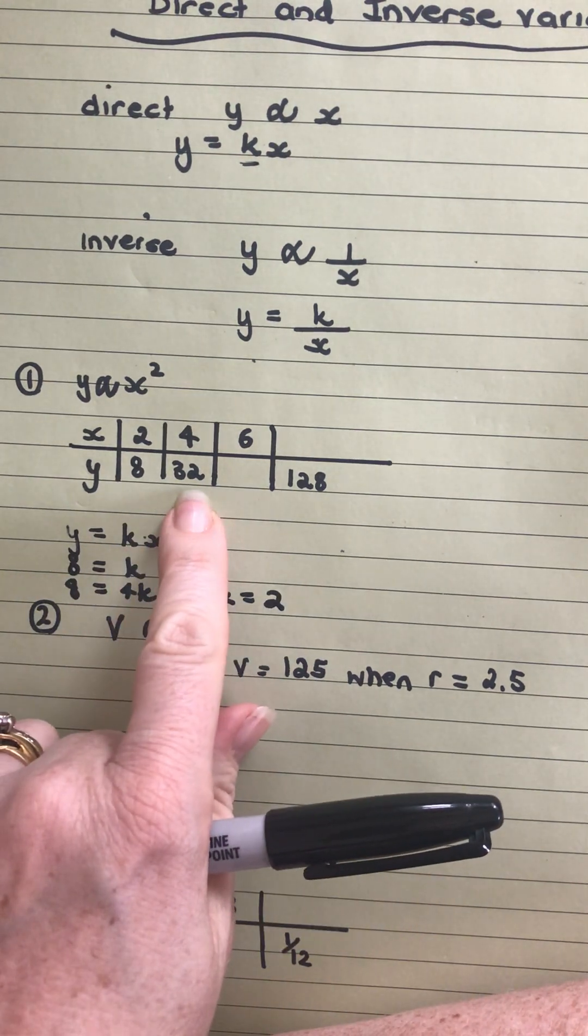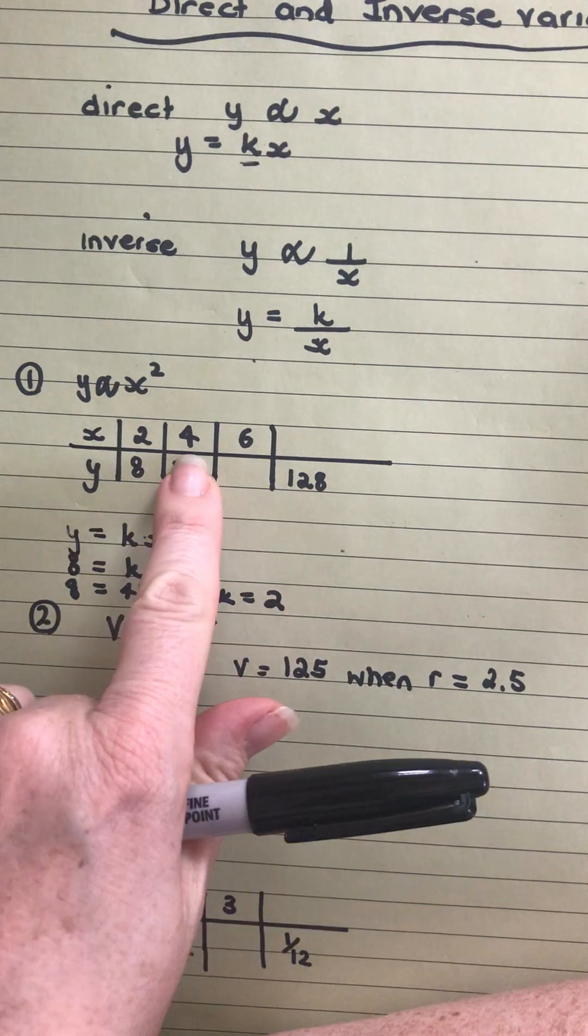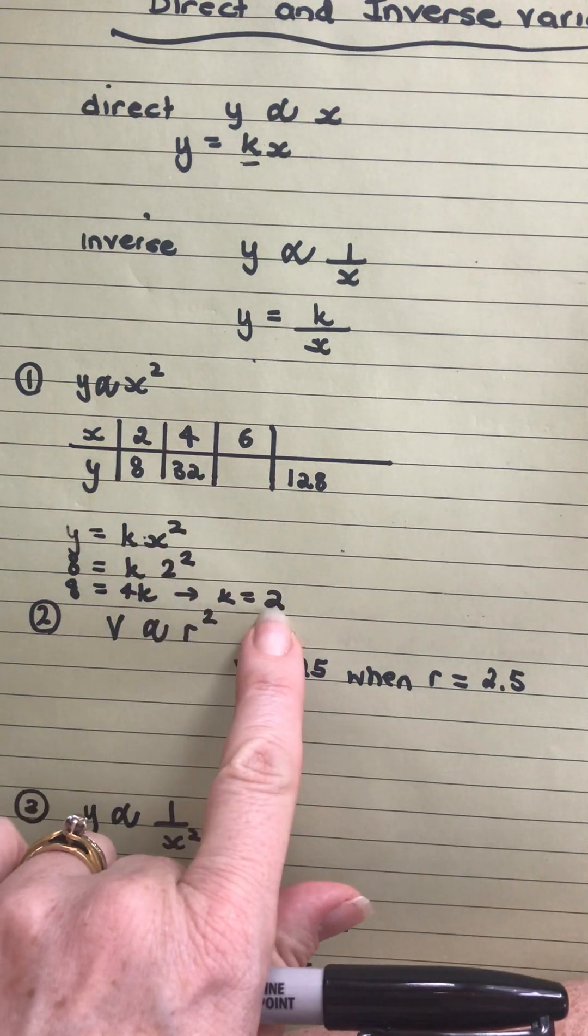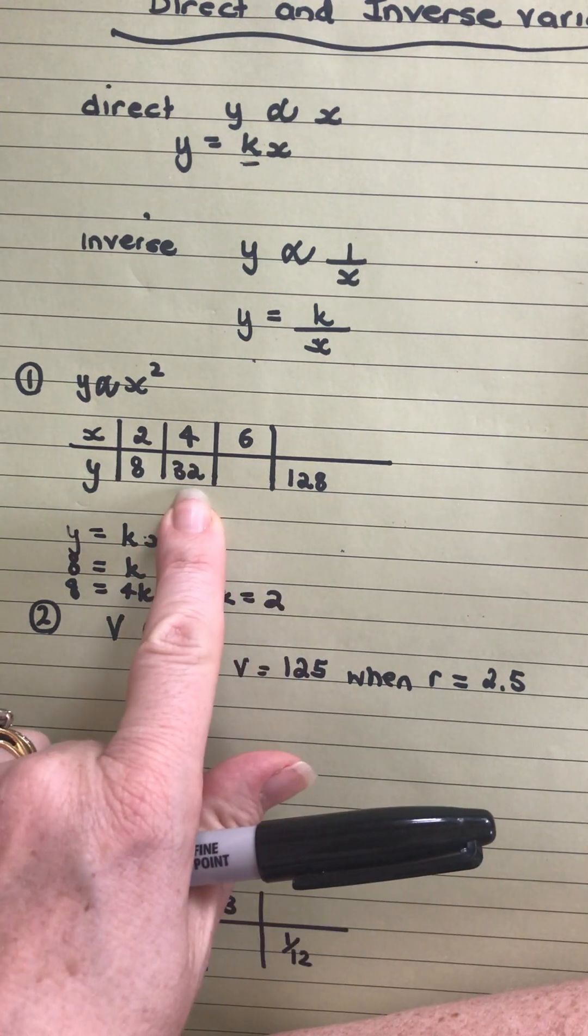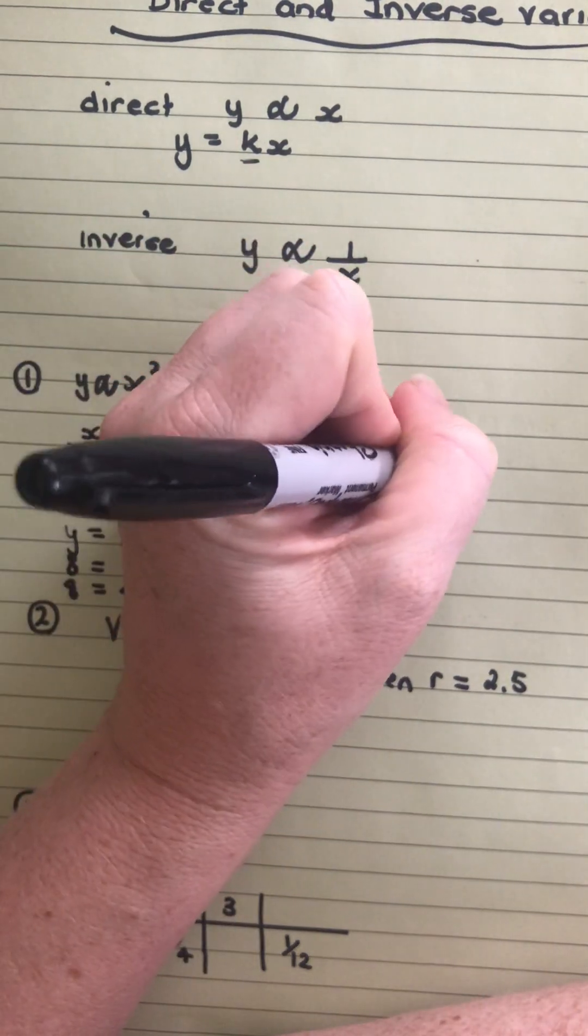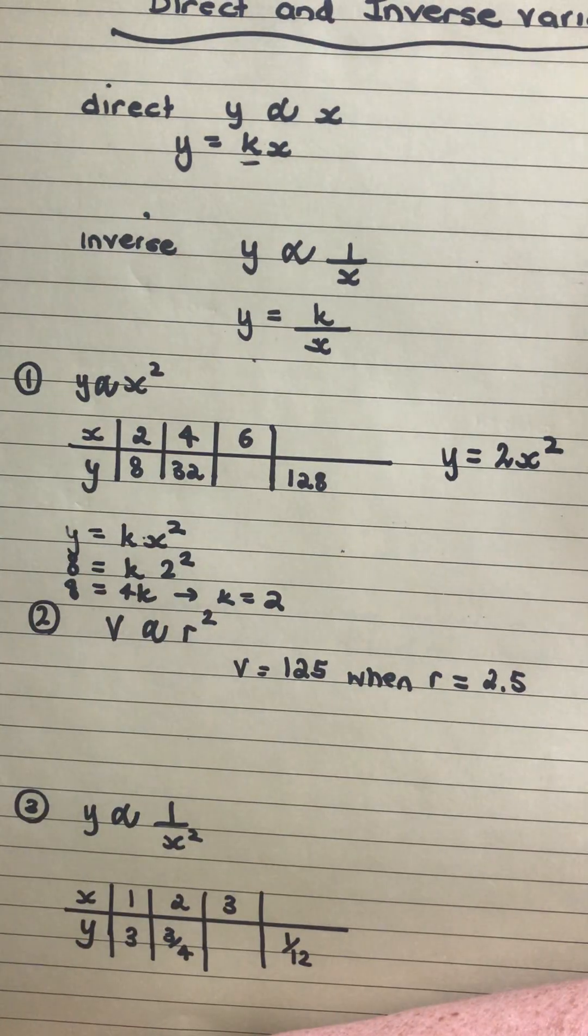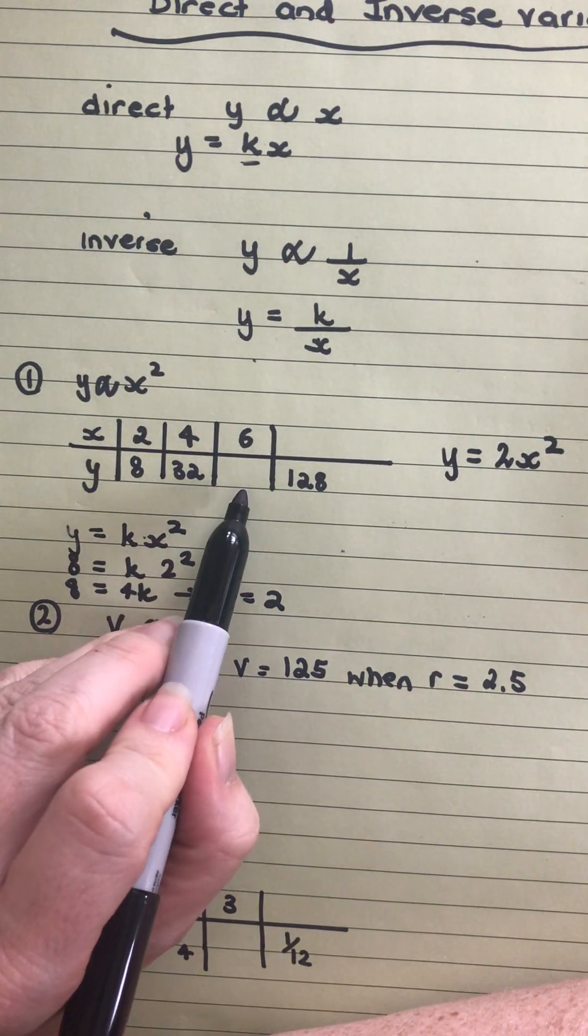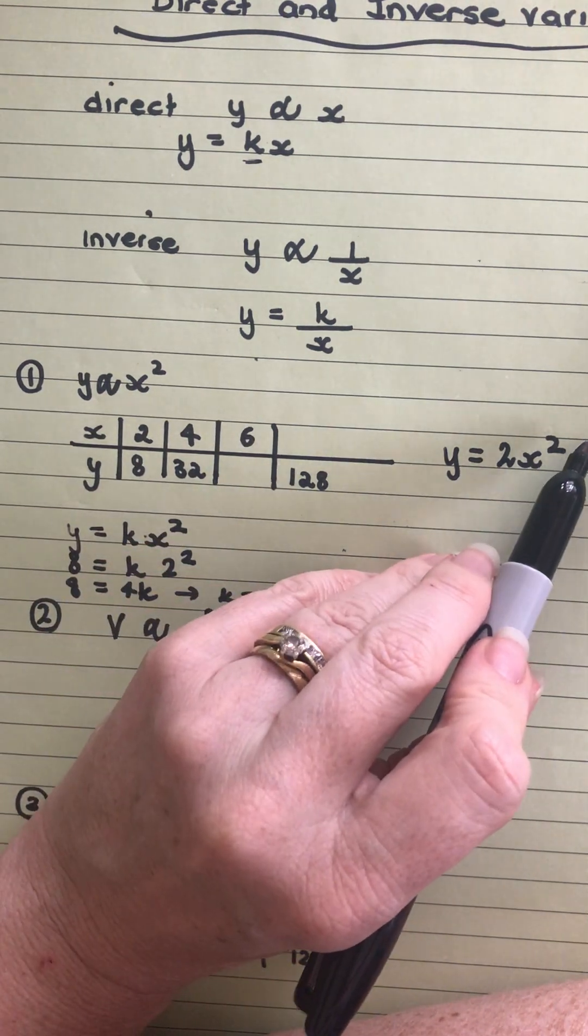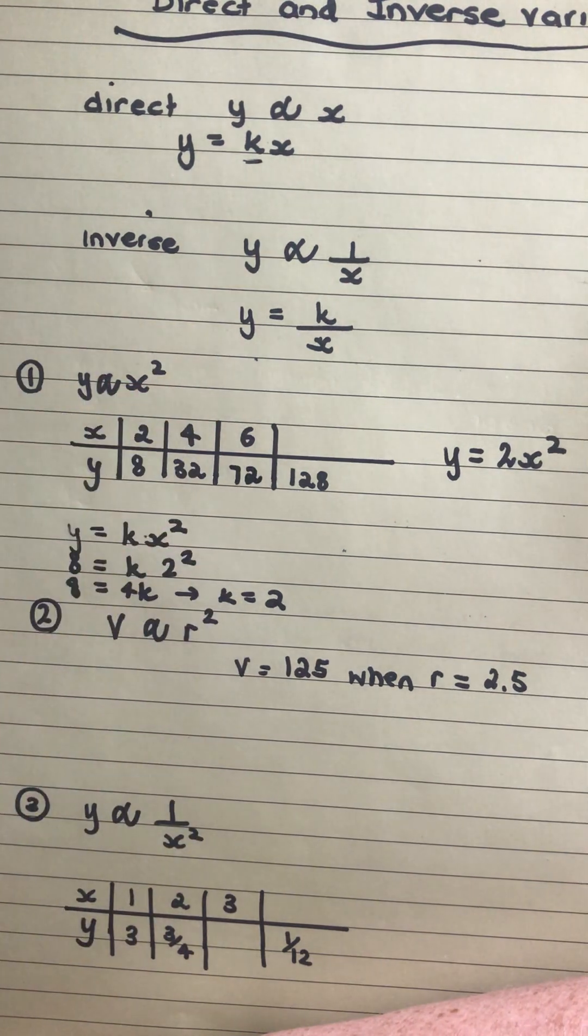Now I can check that here. If I do 2x squared, I should get 32. So 4 squared is 16. When I multiply it by 2, I get 32. So that works. So my equation then that I'm going to be using is y equals 2x squared. When I'm working out this missing value here, my x is 6. So I'll do 2 times 6 squared. 6 squared is 36. 2 times 36 is 72.